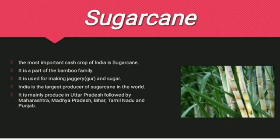We will start with sugarcane, which is the most important cash crop of India. It is a part of the bamboo family. It is further used for making jaggery and sugar. India is the largest producer of sugarcane in the world. States that produce sugarcane are Uttar Pradesh, Maharashtra, Madhya Pradesh, Bihar, etc.